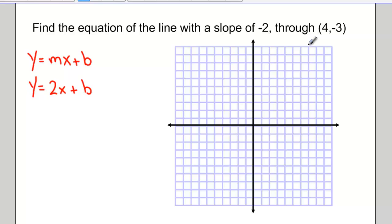And now instead of plotting the point 4 and negative 3 on my grid, I'm going to rather sub that point in to my equation for x and y. Remember that the point 4 and negative 3 is a coordinate, an x coordinate and a y coordinate. So in my equation, I can sub in 4 for x and negative 3 for y.